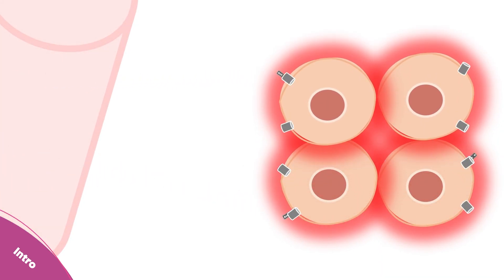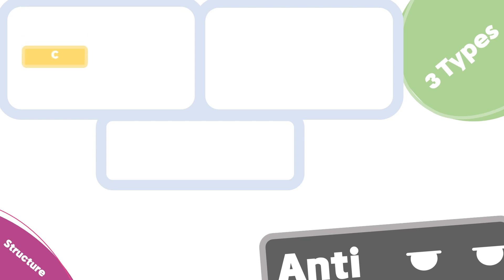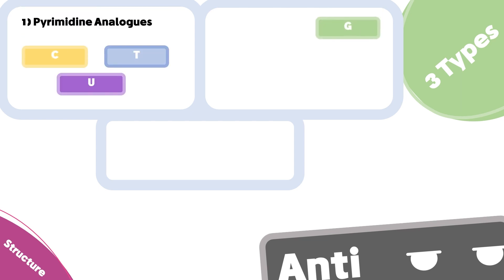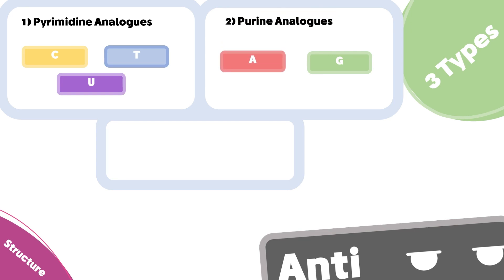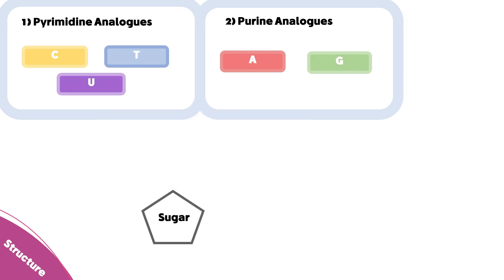Now let's see the chemical structure of this family. There are only three types of anti-cancer anti-metabolites based on their structures. The first type is the pyrimidine analogues. The second type is the purine analogues, which are similar to adenine and guanine. The third type is folate analogues, also known as B9 analogues. The folate metabolites are critically needed for nucleotide synthesis in the cell.